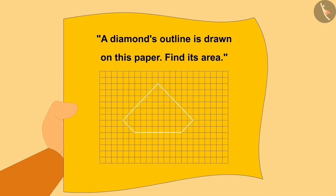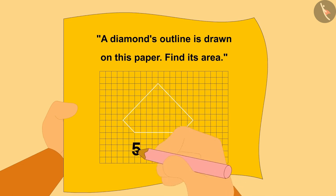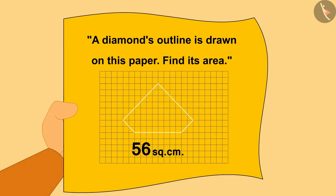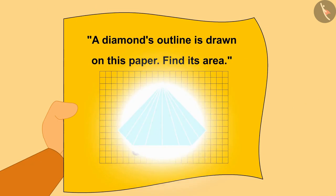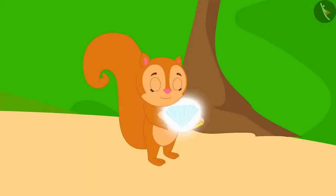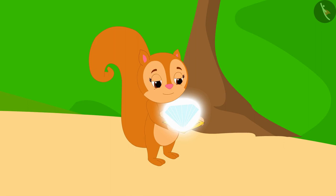Chanda immediately wrote the area of the diamond as 56 square centimeters on that paper. As soon as she wrote it, a diamond of 56 square centimeters appeared in front of her. Chanda could not believe her eyes.